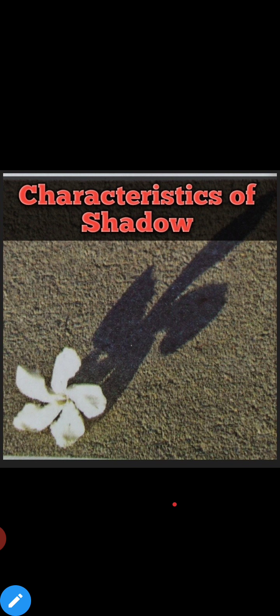And it does not show any color or detail of the object. जैसा कि आप picture में देख पा रहे हैं, जो shadow है flower का, यह flower के color को show नहीं कर रहा है, या और बहुत details को बता नहीं रहा है.